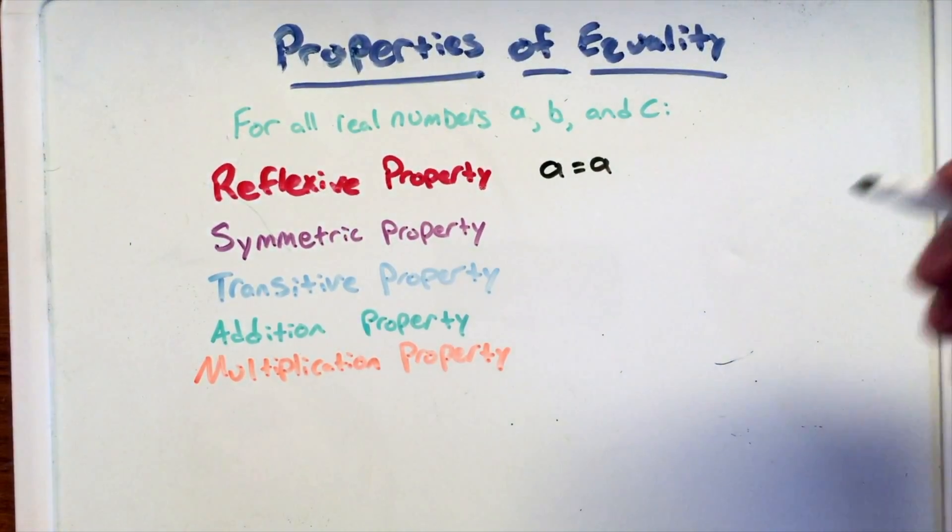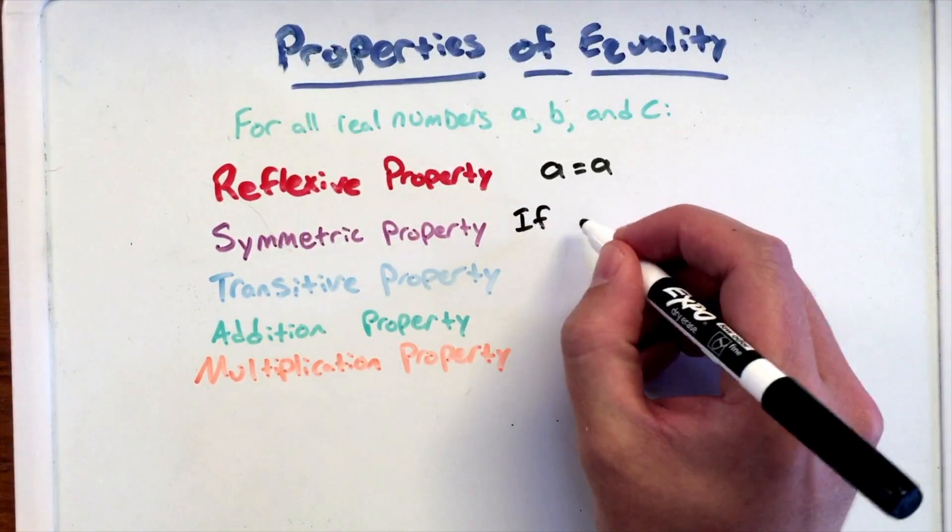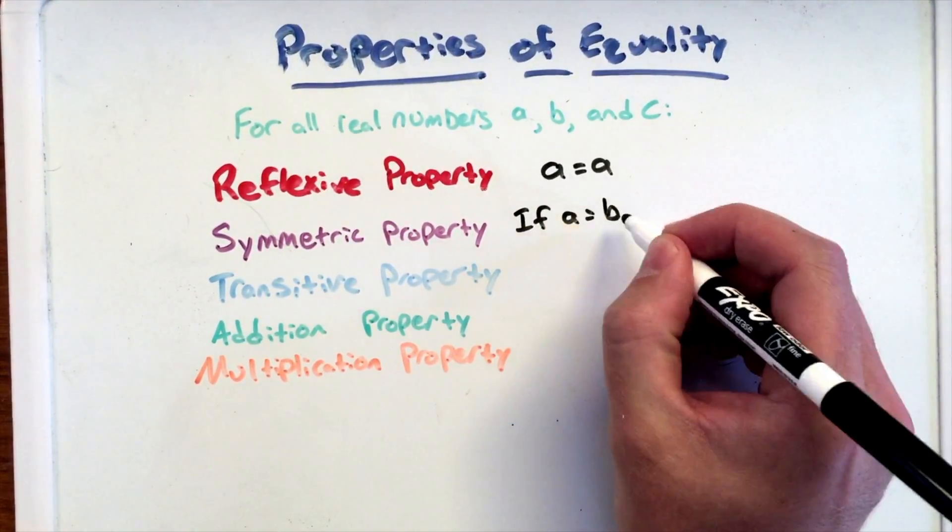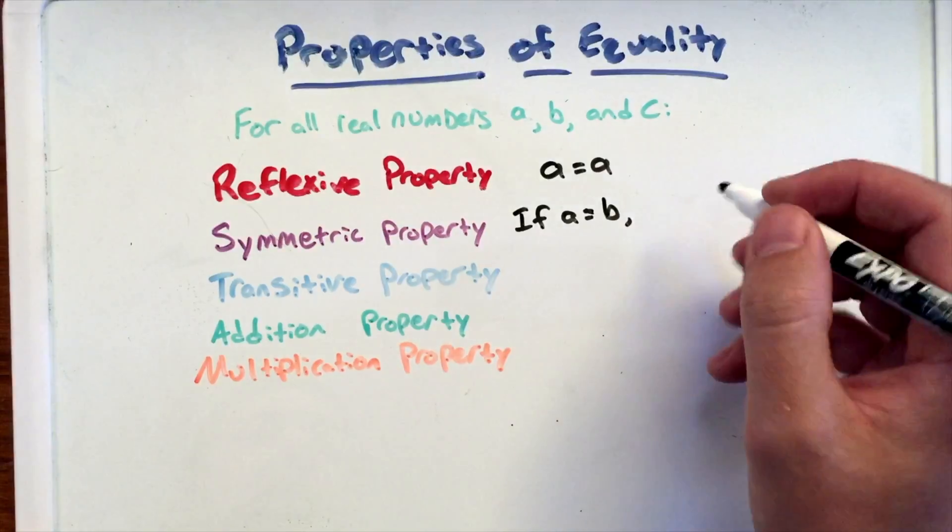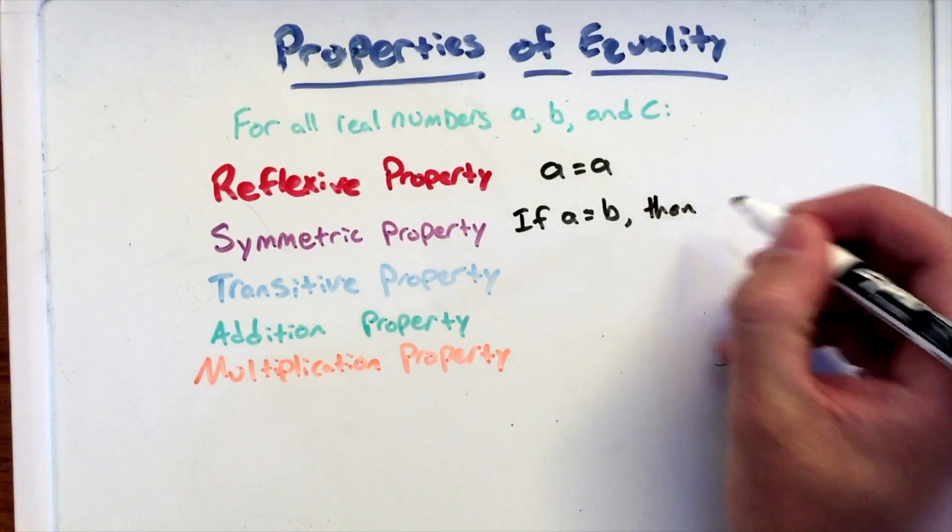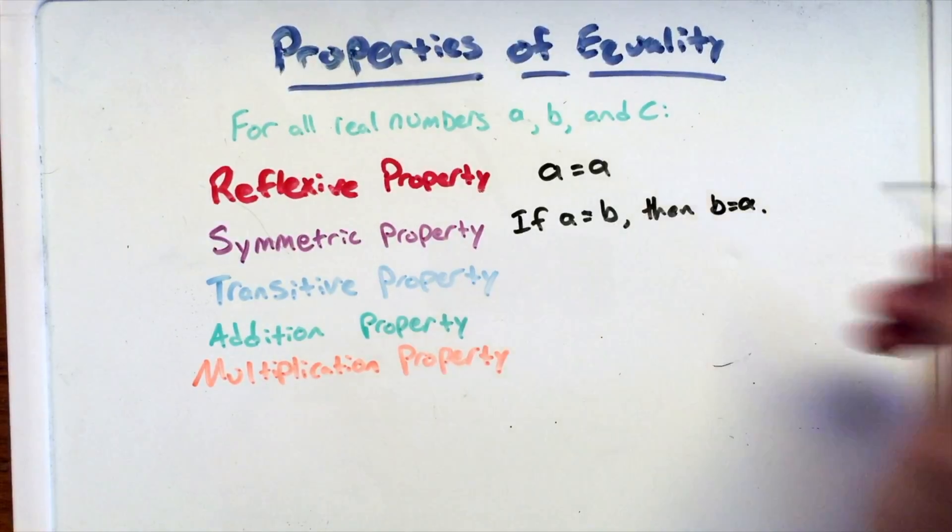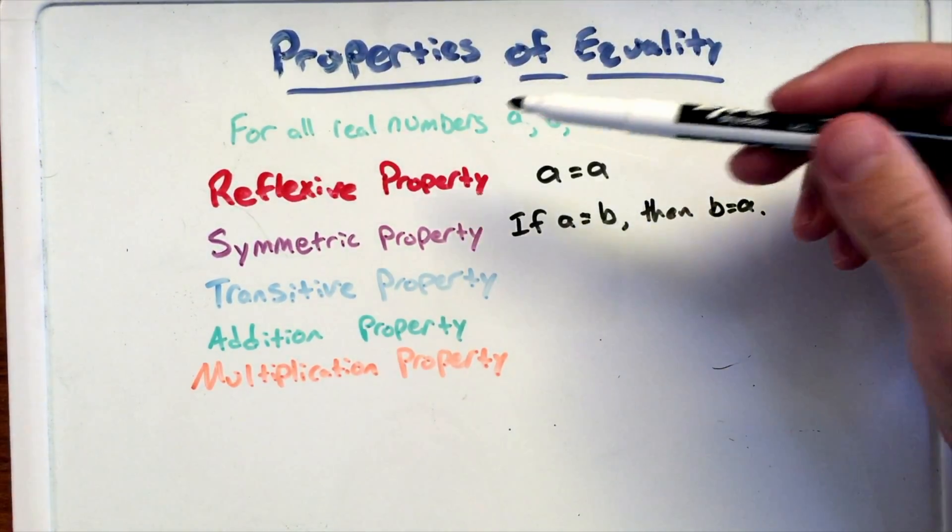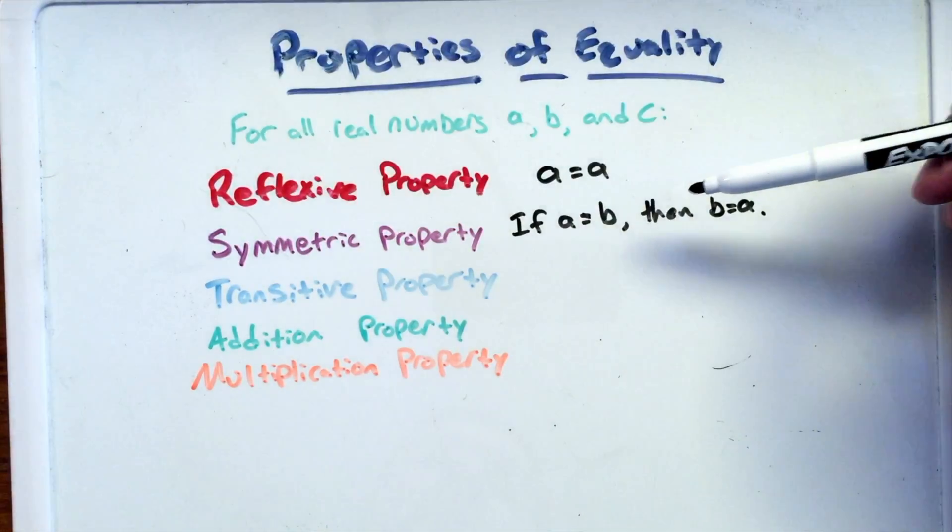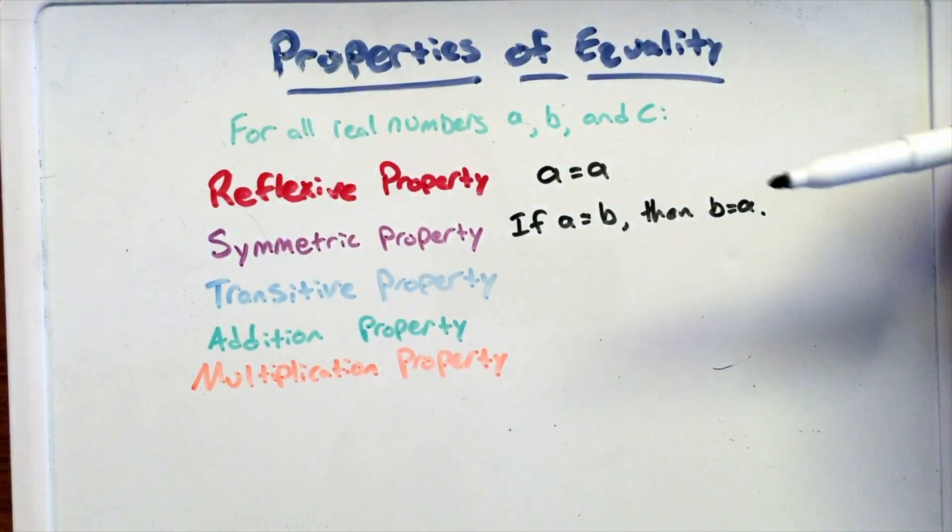The symmetric property says: if A equals B, then we can flip it - B equals A. So if A equals B, if a real number equals a different real number, then we can flip it and they're equal the same way too, so it doesn't really matter the order.